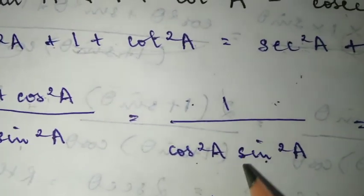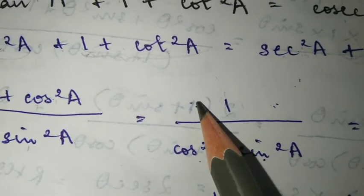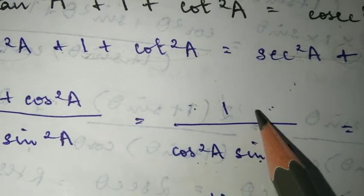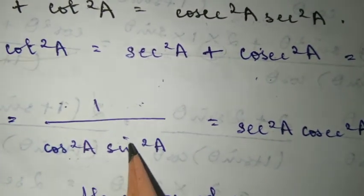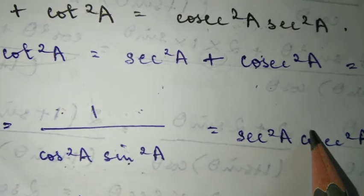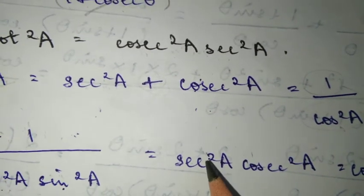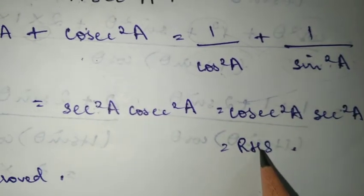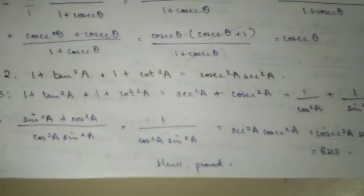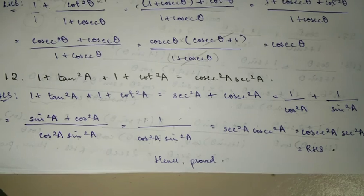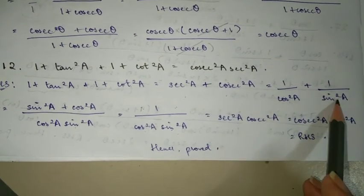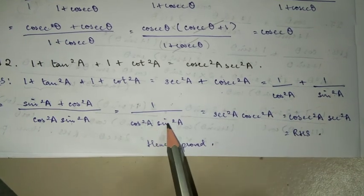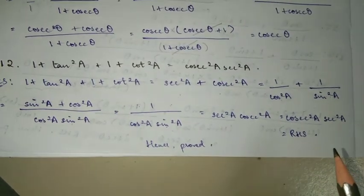Now, 1 by cos²A is sec²A by formula. 1 by sin²A is cosec²A by formula. These multiply together: sec²A times cosec²A, which is 1 by sin²A times cos²A. So we have sec²A into cosec²A. But in the question they want cosec²A into sec²A. In multiplication, the order doesn't matter. 2 times 1 equals 1 times 2. This equals RHS, hence proved. So this is how you solve question number 11 and 12. I hope this helps. Bye!